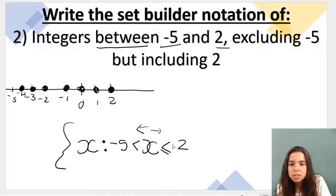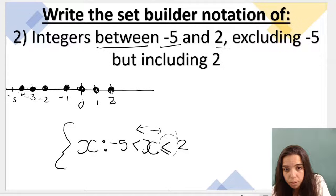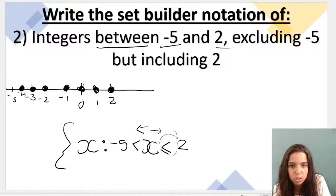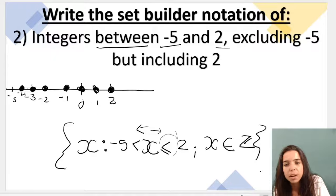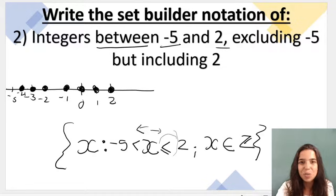So what I'm saying with this little symbol over here is that x can equal 2 or it can be smaller than 2, which we've said here with our dark dots. Then we do our semicolon and we say x is an element of integers. And we close our curly bracket on the other side. Let's do one more example.